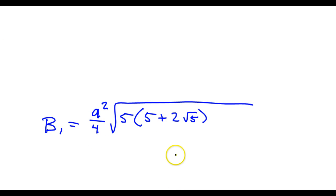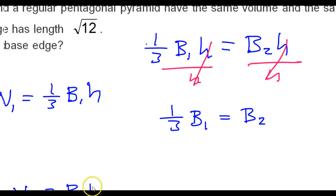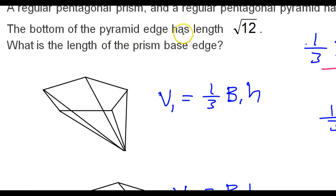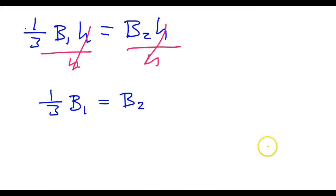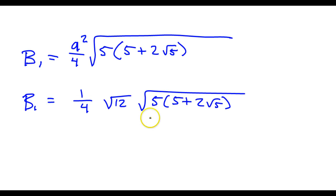Now the point is we know what a is. The problem said that the side length has edge radical 12. So that's a in this formula. So this is radical 12. So I've got B1 here is equal to one-fourth times radical 12 times all of this.